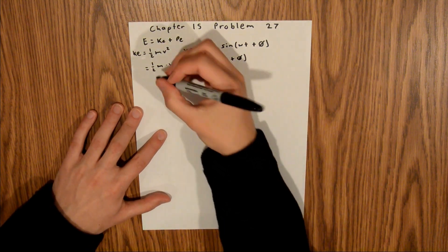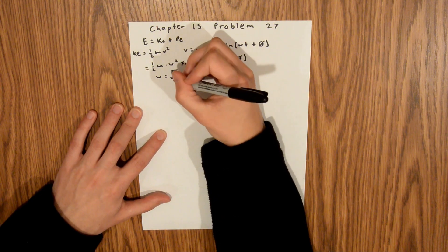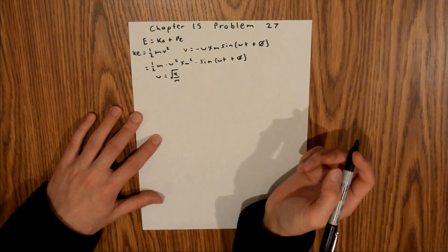And we also know that omega is equal to the square root of k over m. And so we can plug that right in.